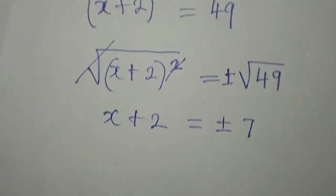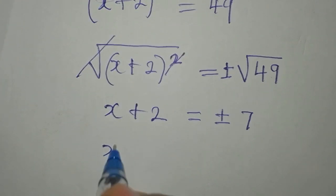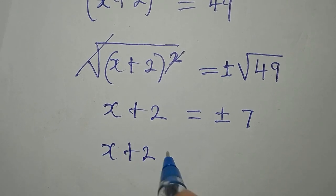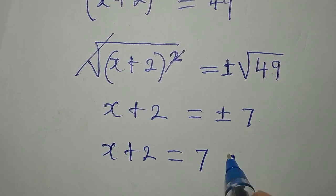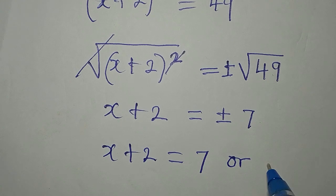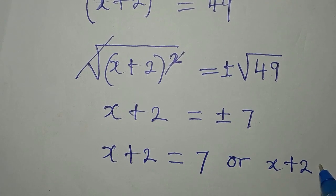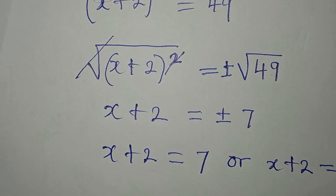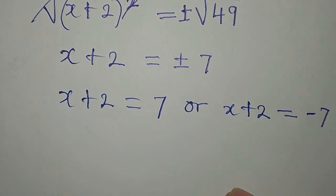So we are saying that x + 2 can be equal to 7, or x + 2 is equal to -7, because of the negative that we have over there.